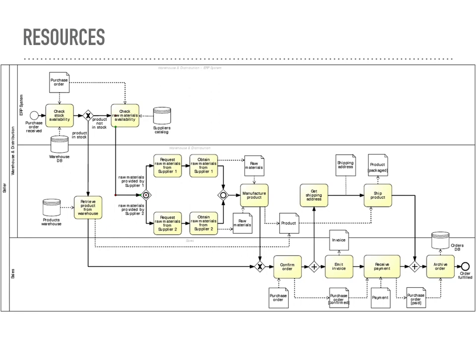Active resources are often represented as swim lanes or lanes within a pool, indicating their role or responsibilities in the process. Passive resources, also known as system resources or objects, represent entities that provide services, information, or support to the business process, but do not actively participate in executing activities. They typically correspond to systems, databases, or external resources that are accessed or utilized by the process, but do not have decision-making capabilities or control over the process flow. Passive resources are usually depicted as separate elements within a process diagram, connected to activities through data associations or message flows.